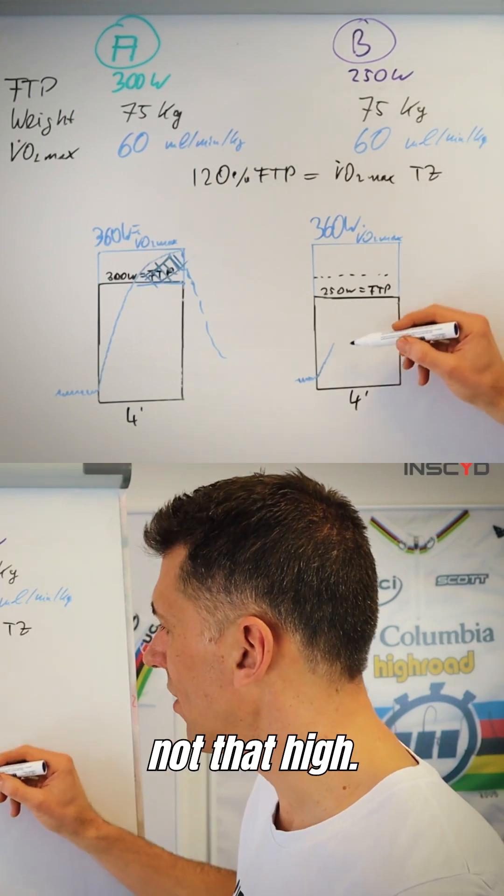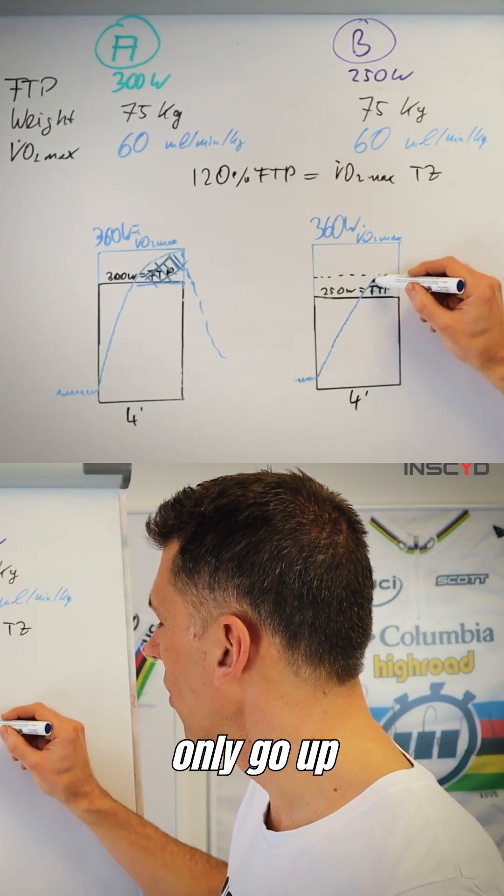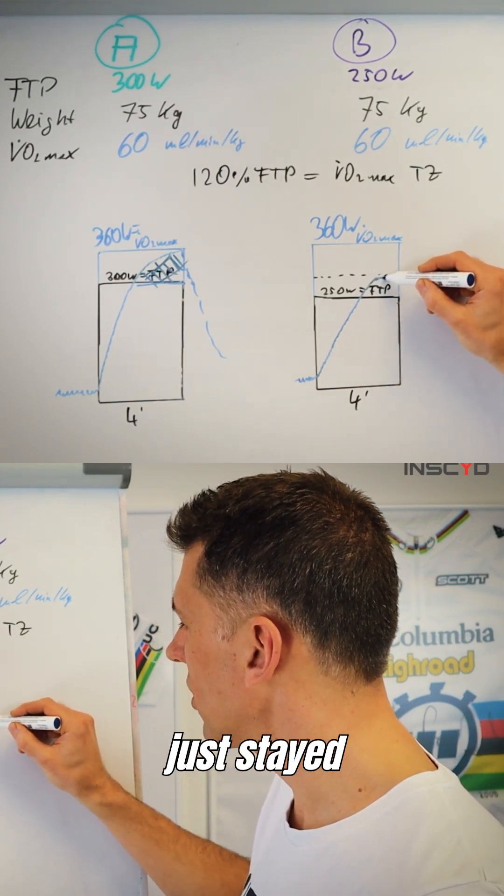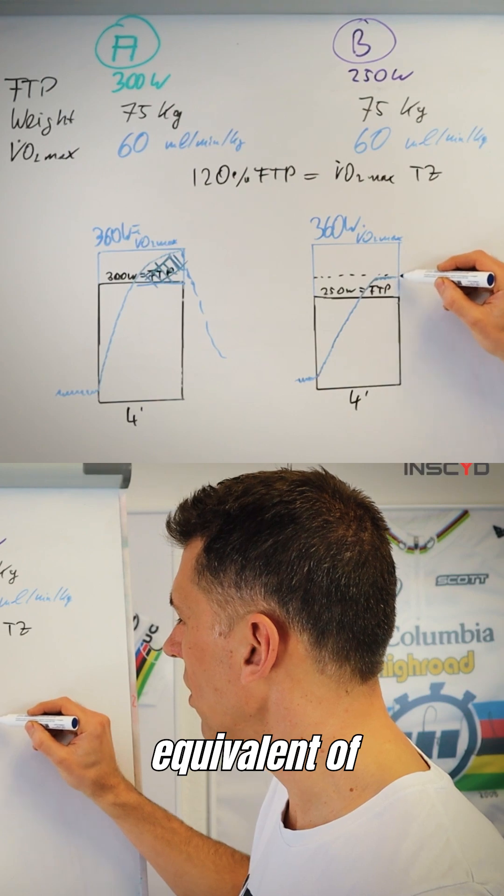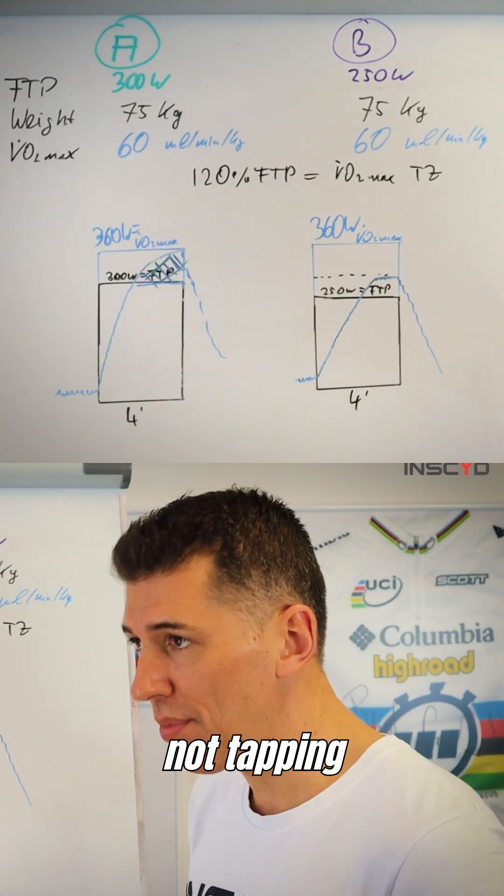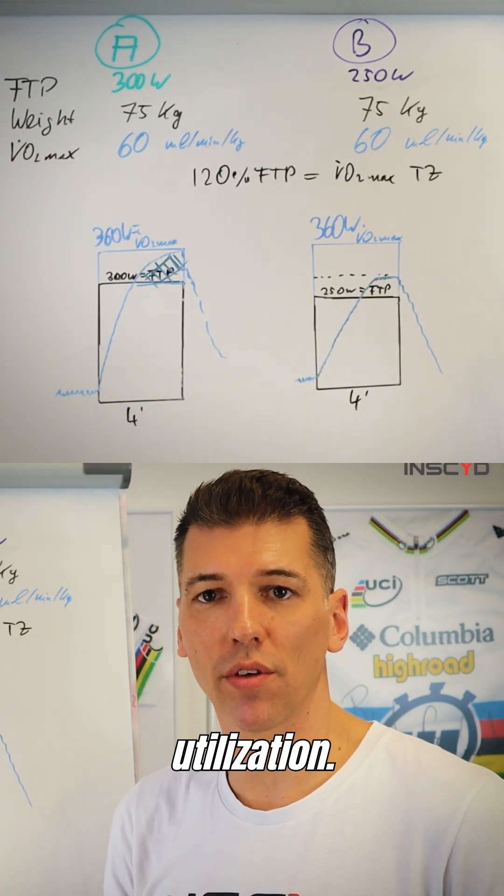It will go up a little bit slower, and then it will only go up here, right? Not all the way to VO2max, but it will just stay below this equivalent of 300 watts, and then it will drop again. So it's actually not tapping into that high percentage of VO2max utilization.